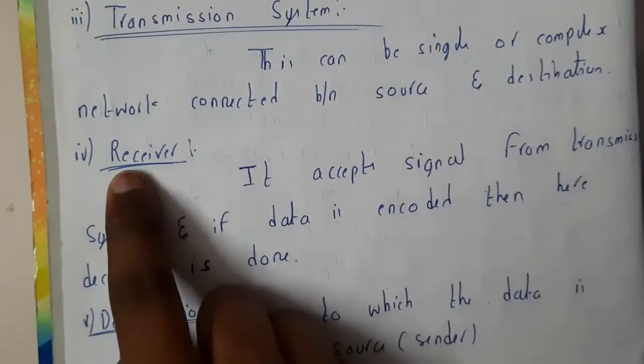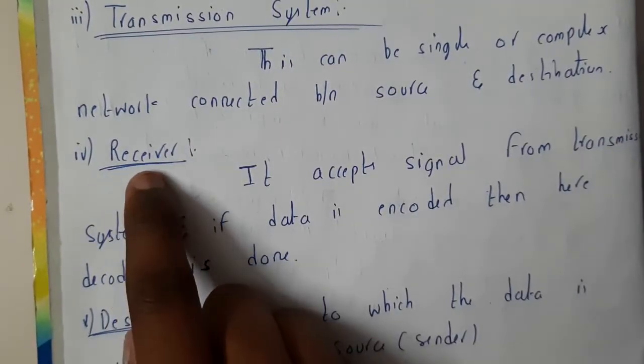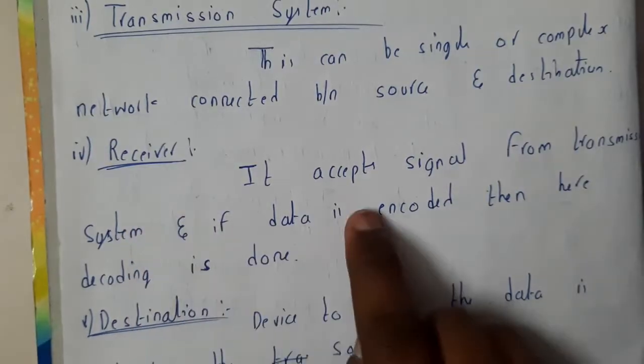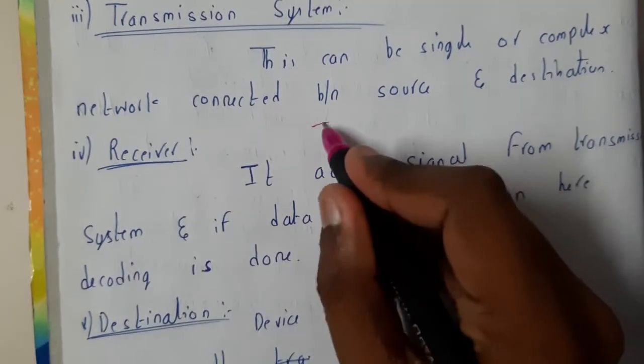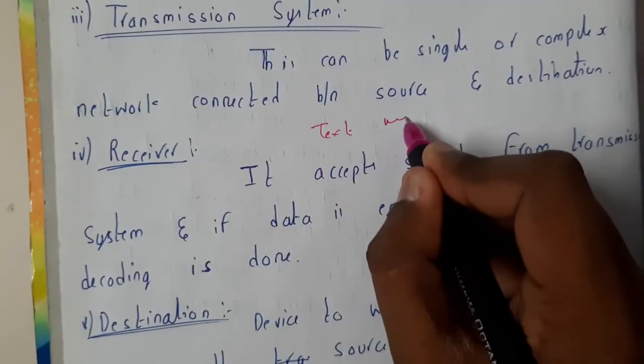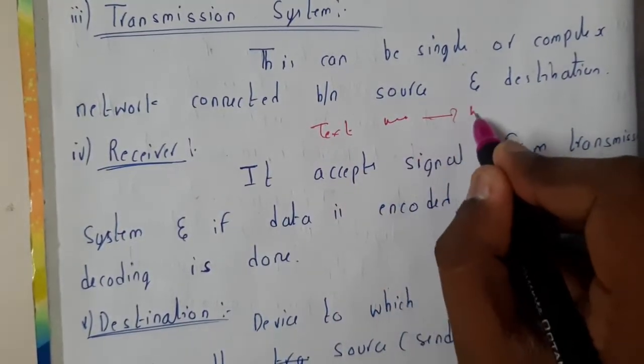The receiver is connected between the source and destination. It does decoding. Basically, our text will be converted to symbols and transmitted, and these symbols will be again converted into text.